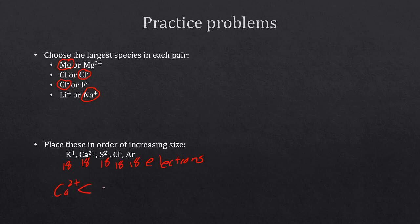After calcium two plus, the next biggest is potassium plus, then neutral argon, then chlorine minus. Finally, the largest is S 2 minus, which has only 16 protons with 18 electrons — it can't pull them in as well, so it gets really big.